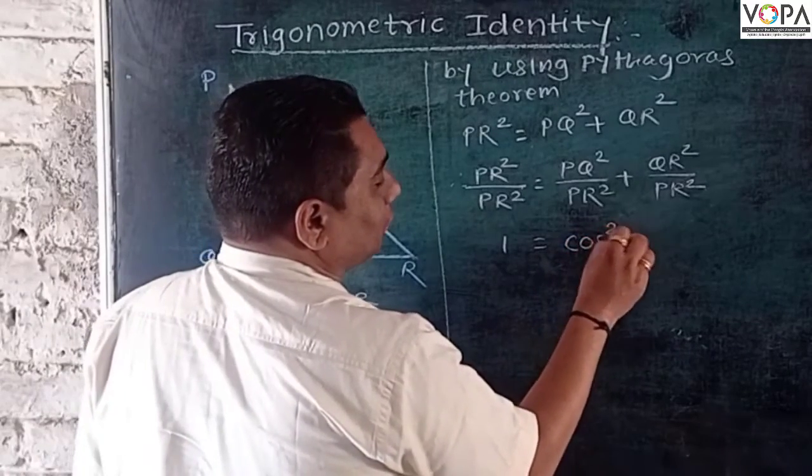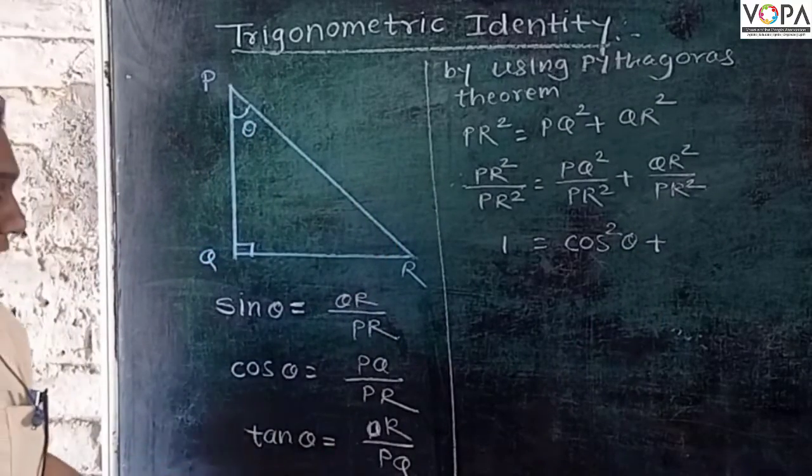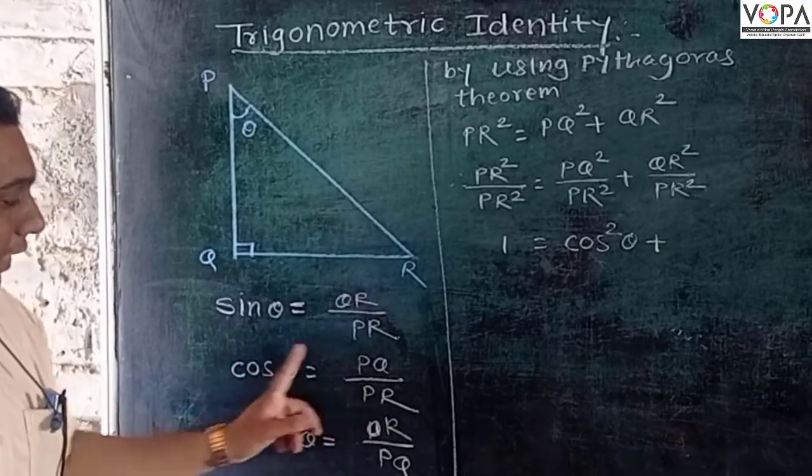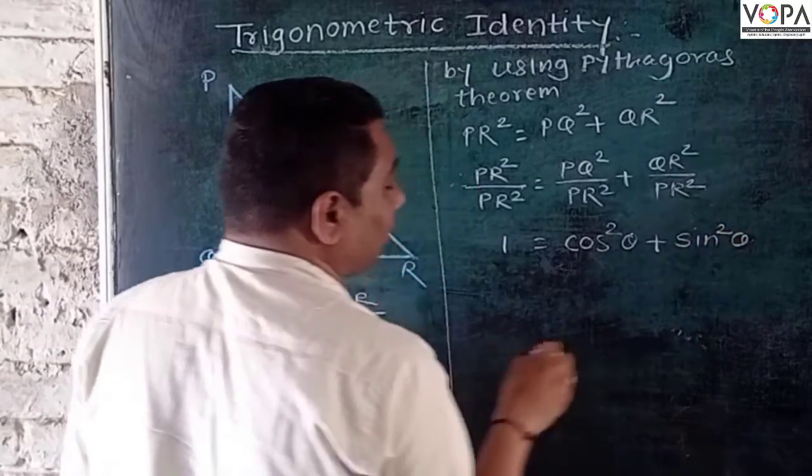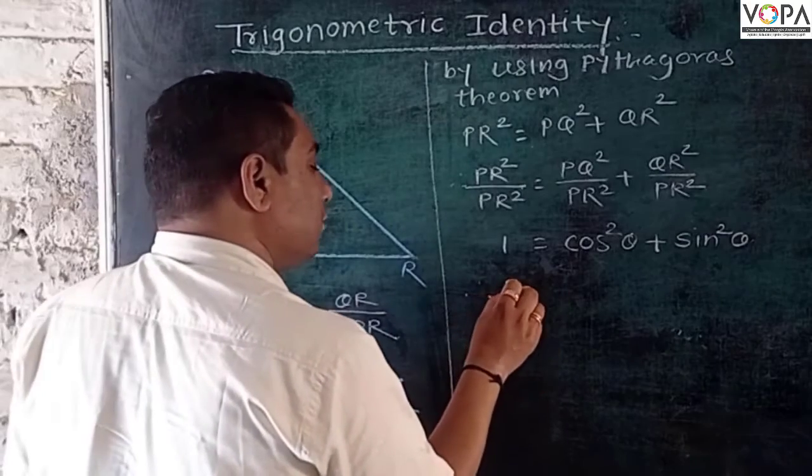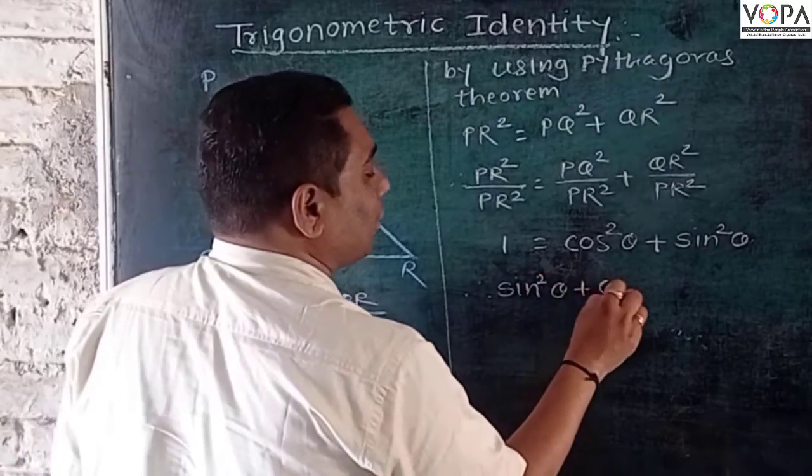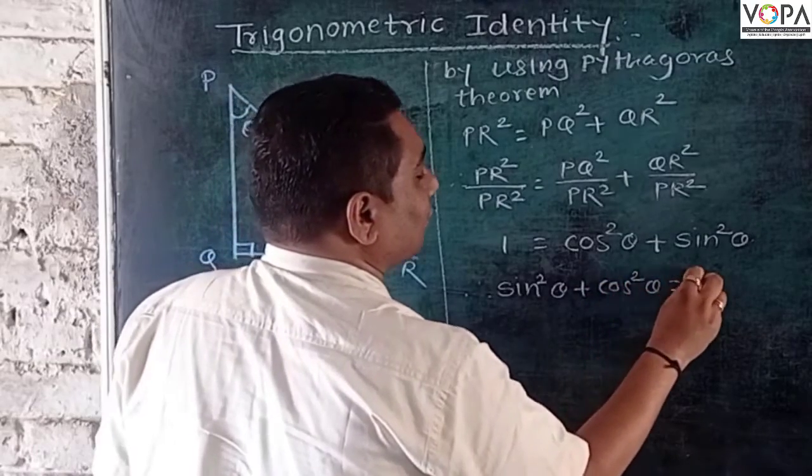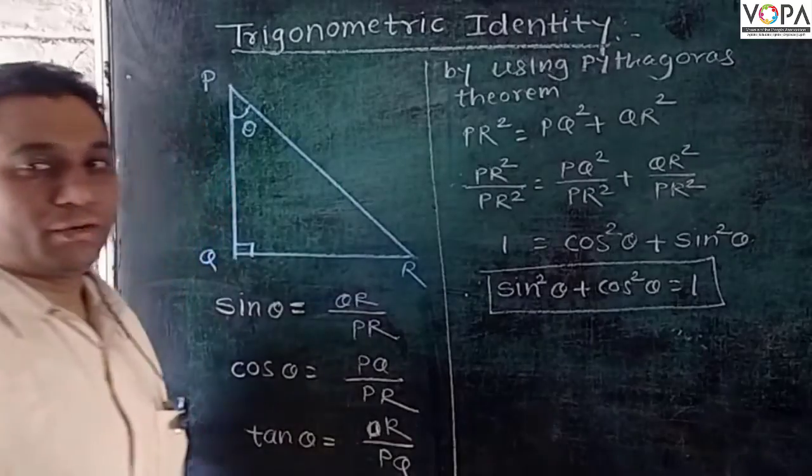So PR square upon PR square equals 1. PQ upon PR is cos, so this becomes cos square theta. QR upon PR is sine theta, so we get sine square theta. In this way, sin square theta plus cos square theta equals 1. So this is one identity from trigonometry.